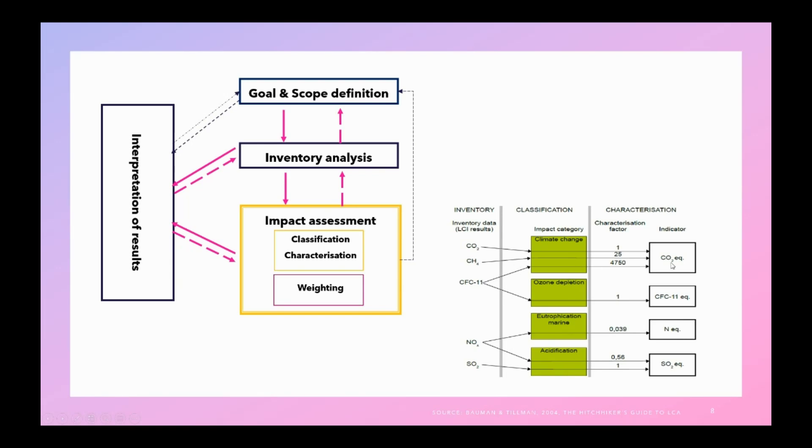And in this process you use the characterization factors. For example, here I have as an example. So when all this is done, you get the single score for each impact category. For example, in case of climate change or global warming potential, you have a single digit score that is carbon dioxide equivalent. And in case of ozone depletion, that is CFC equivalent, and the same as eutrophication and acidification.